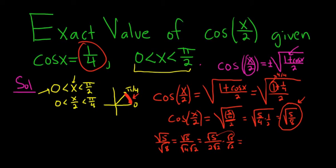So 5 times 2 is 10. On the bottom, we get 2. And then square root of 2 times square root of 2 is 2. So we get square root of 10 over 2 square root of 2, which simplifies to square root of 10 over 4. So both of these are perfectly acceptable answers. I hope that made sense.